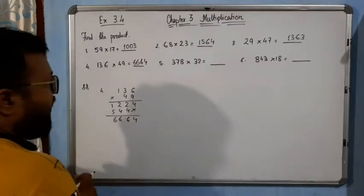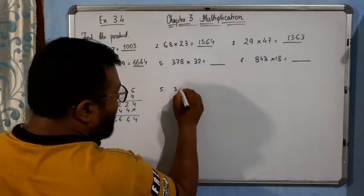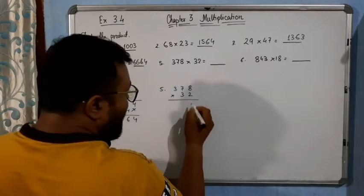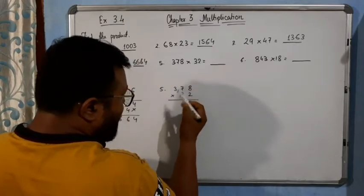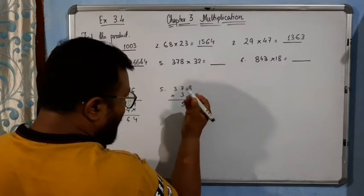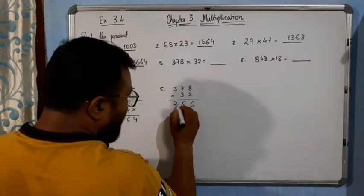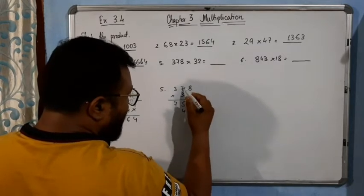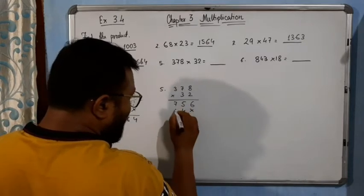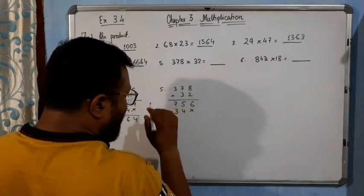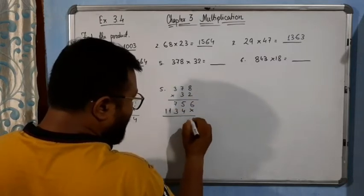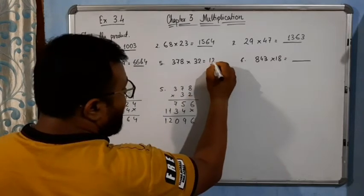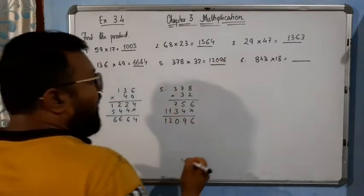Now come to question number 5: 378 multiplied by 32. It is very simple. 2 times 8 is 16, write 6 carry 1. 2 times 7 is 14, plus 1 is 15, write 5 carry 1. 2 times 3 is 6, plus 1 is 7. Cross: 3 times 8 is 24, write 4 carry 2. 3 times 7 is 21, plus 2 is 23, carry 2. 3 times 3 is 9, plus 2 is 11. So the answer is 12096.